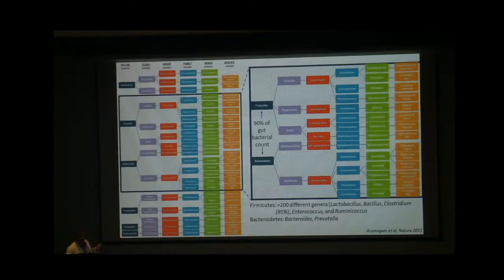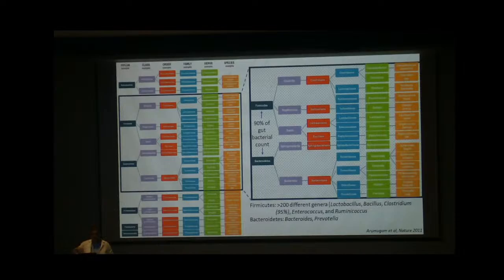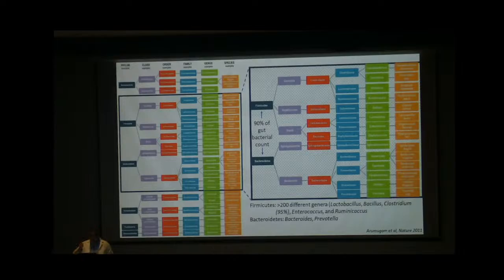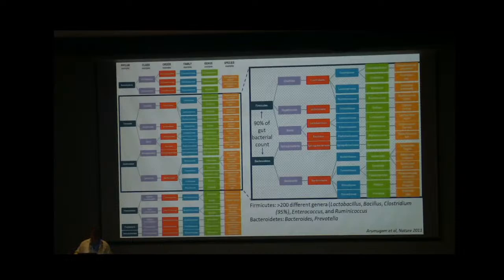Within this 90 percent, Firmicutes alone have almost 200 different genera contributing to 90 percent of the gut bacterial population. Of those, Clostridium constitutes 95 percent. Should we focus on Clostridium? Yes, but as gastroenterologists know, Clostridium has a variety of species and strains — some beneficial, some pathogenic — and these strains are present together in the gut simultaneously. E. coli, Streptococcus, and Pseudomonas are all present in the gut, controlled by the more dominant species so they don't become pathogenic. Importantly, the presence of bad bacteria does not mean dysbiosis — it is naturally present in healthy individuals too.